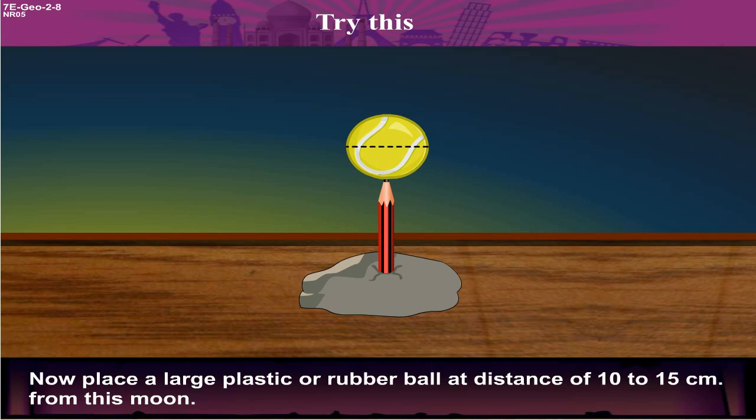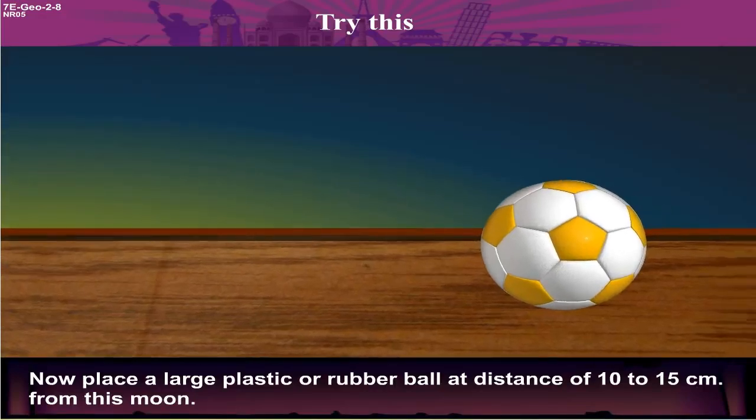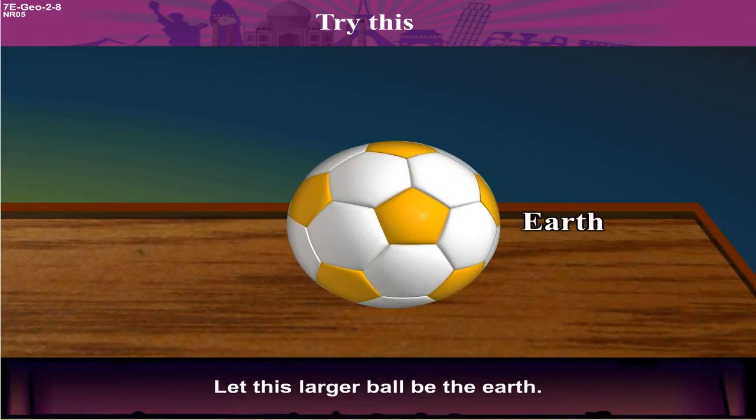Now place a large plastic or rubber ball at a distance of 10-15 cm from this moon. Let this larger ball be the earth.